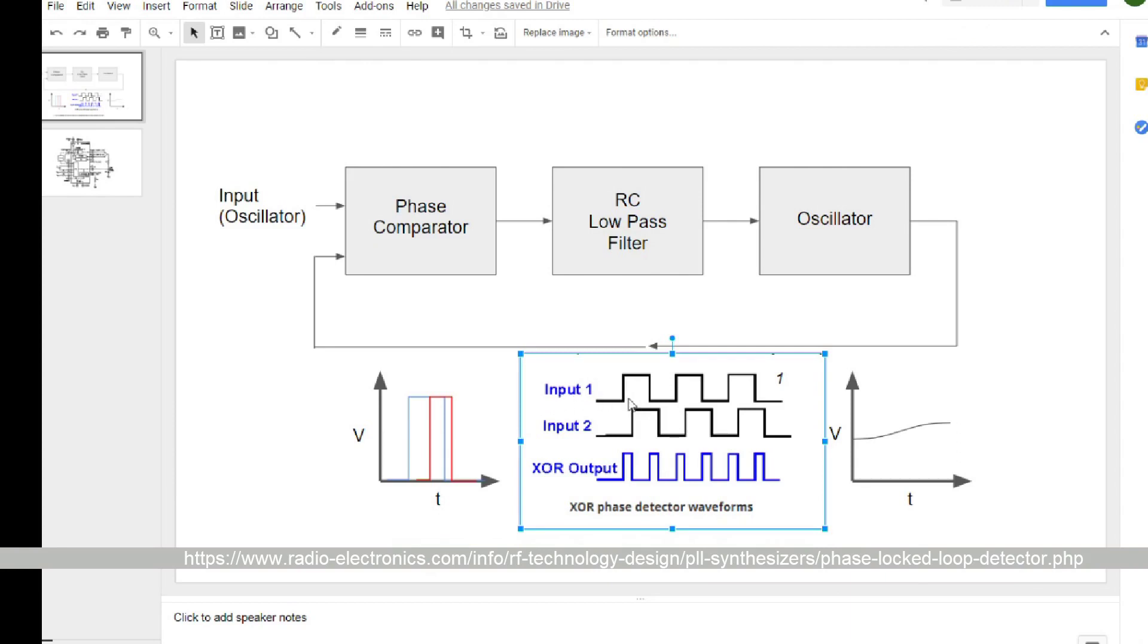But basically, you've got two waves in, and you can see there's an exclusive OR output. And what that means is when one or the other is high, and exclusively one of them is high, but not both. So exclusively OR. One is exclusively up, OR the other is exclusively up.